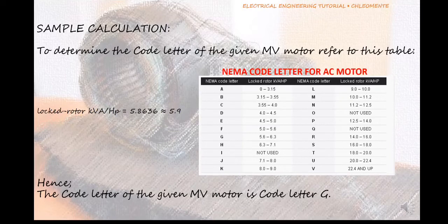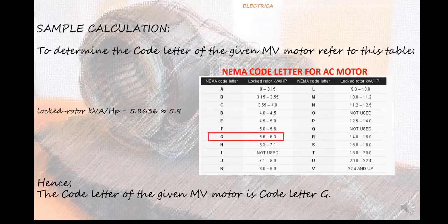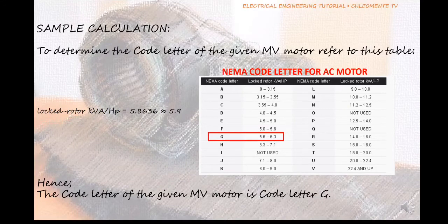In this example, the value of 5.9 is between the minimum and maximum values of 5.6 to 6.3 that corresponds to NEMA code letter G. So the code letter of the given MV motor is letter G.